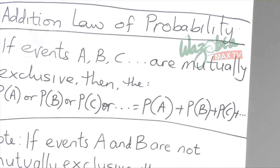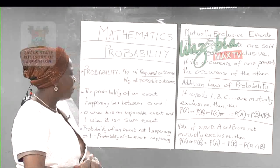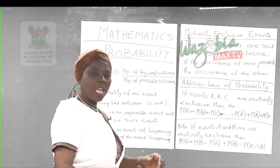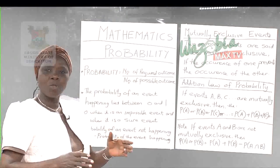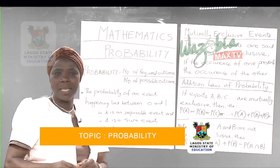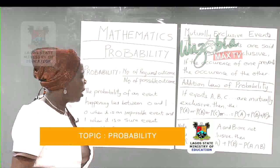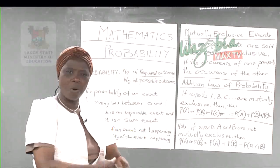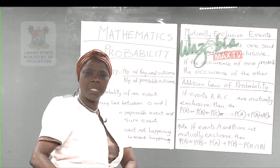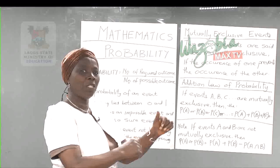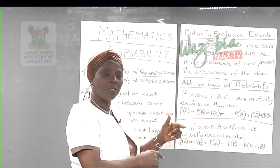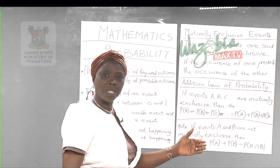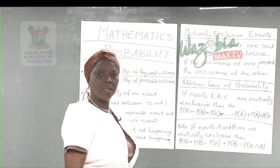In set theory, A union B equals A plus B minus A intersection B. But in mutually exclusive events, there is no intersection — they cannot occur at the same time. Hence the A intersection B is zero, and that is why, for mutually exclusive events, the probability of A or B is the addition of their separate probabilities.